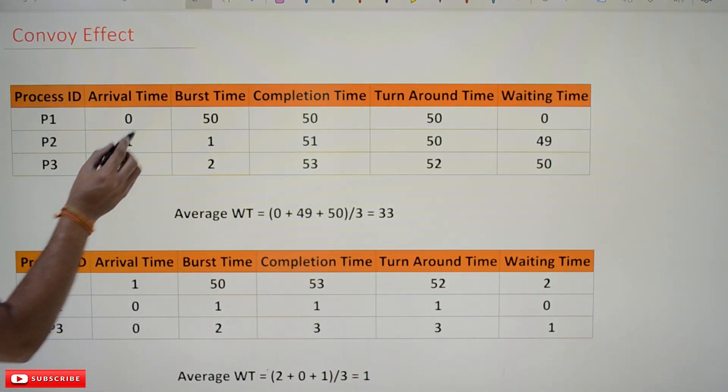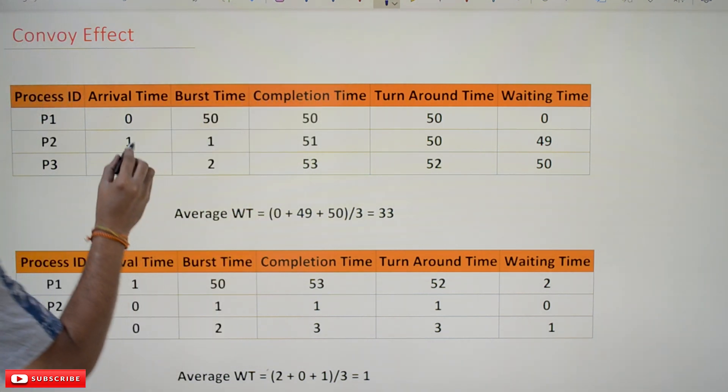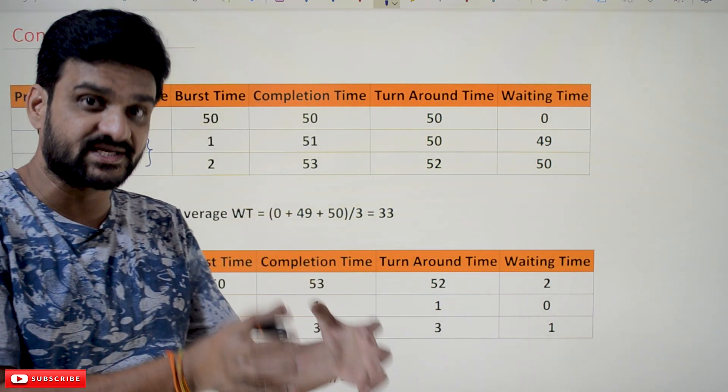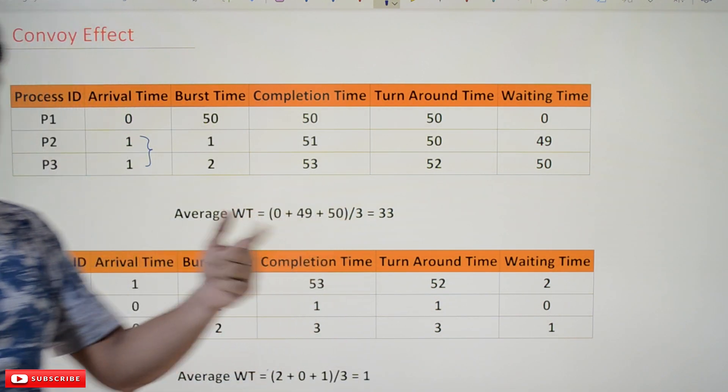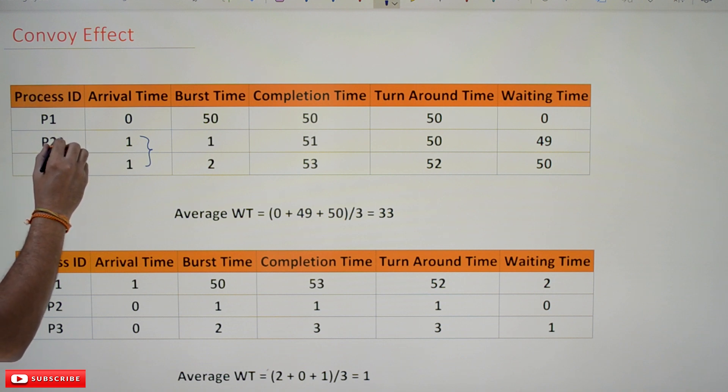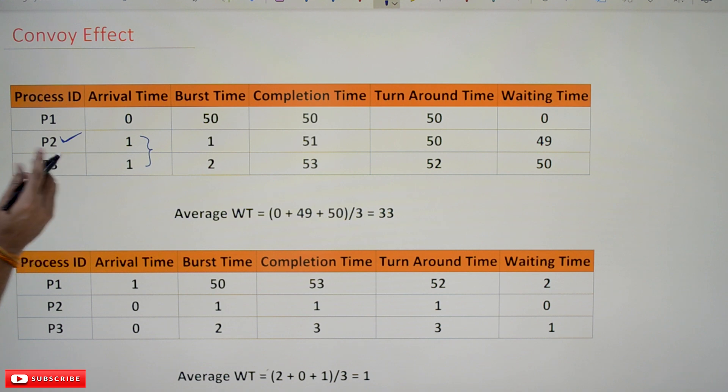Similarly, if you take this possibility—and one more point to understand is here both the processes are having same arrival time. That means at the same point of time two processes have arrived. Then how are we going to choose the process? If both of them are having the same arrival times, then we are going to choose the process with lower ID.